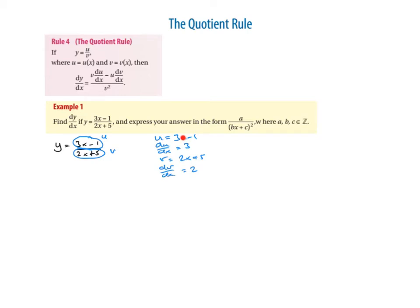If you're not sure why: remember the number in front of just an x is retained, and if you have a constant, when we differentiate it, it goes to 0. So 2x differentiates to 2, and the plus 5 is a constant, so that goes to 0. Next thing we do is write out the formula: dy/dx is equal to v(du/dx) minus u(dv/dx) all over v squared.